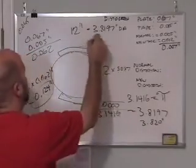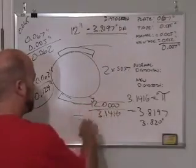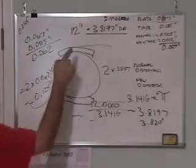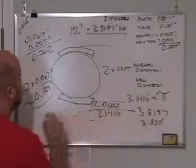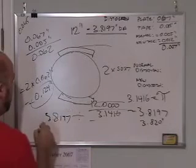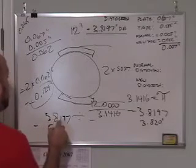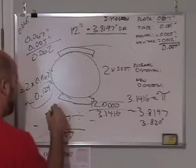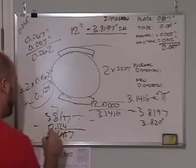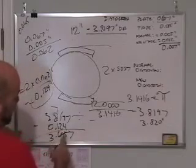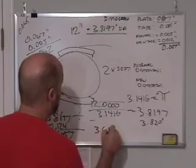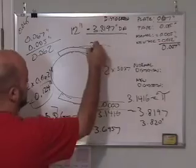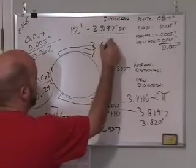So 3.8197 divided by... Let me first take away from that. I have to take away the... 3.8197 minus 0.124 equals 3.6957. I'll divide that, 3.6957, the lower value, the lower diameter,